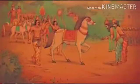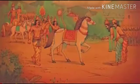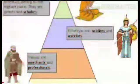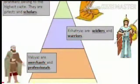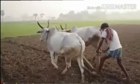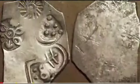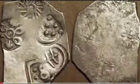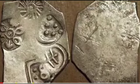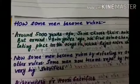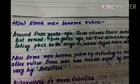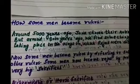This picture is showing the Ashwamedha Yag of that time. The next picture is of the Varna system. Another picture is showing changes in agriculture. The next picture is showing the taxation system — punch-marked coins. So our first topic is: How Some Men Become Rulers.